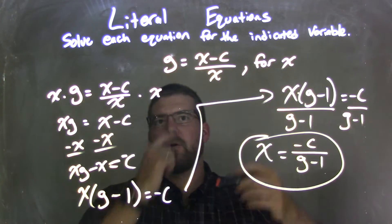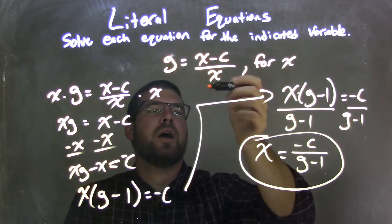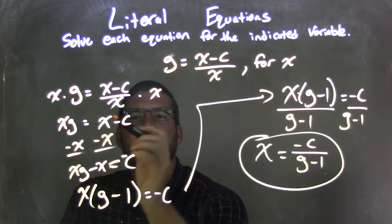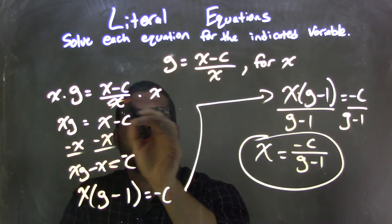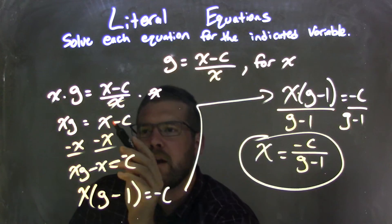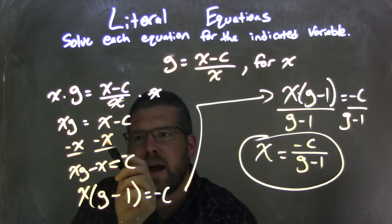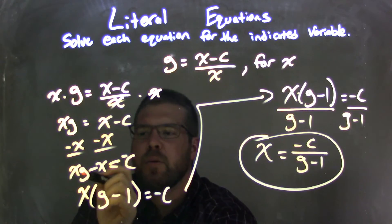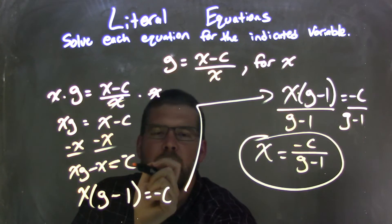We were given g equals x minus c over x, and we're solving that for x. I rewrote my equation, and then I multiplied x to both sides. Then I eliminated the x from the denominator. I wanted to bring all my x's together, so I subtracted x from both sides, leaving me with xg minus x equals negative c.